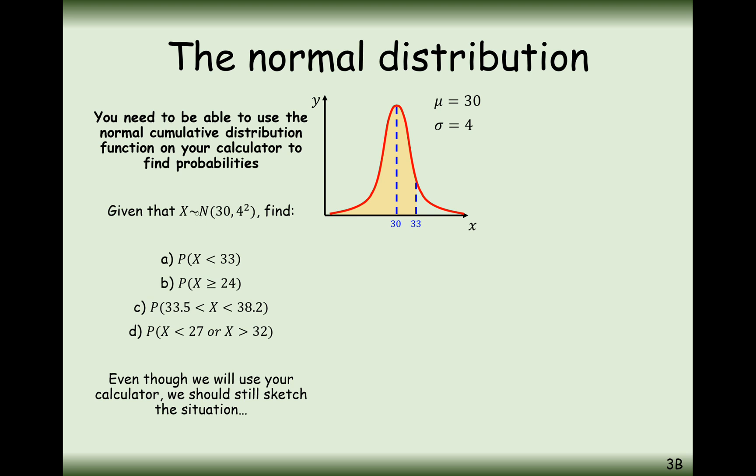In this question here, we're asked to work out the probability that the outcome is less than 33 when the mean is 30 and the standard deviation is 4. This is how we would write it in the normal distribution: N(30, 4²). Remember, standard deviation squared is the variance, so it's effectively the variance that goes in the second part of the comma there.